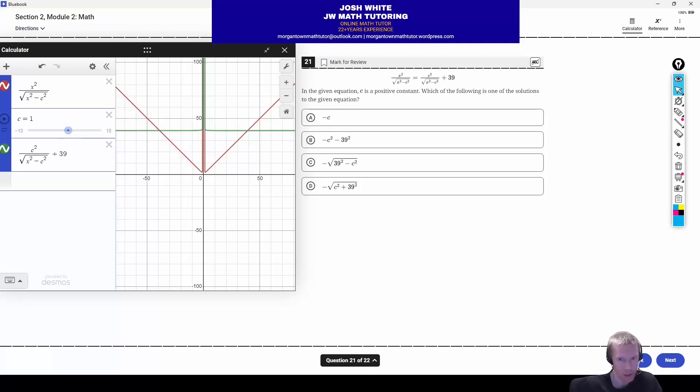So now notice, I set the C value equal to 1. And it tells us in the problem C is a positive constant. So that matches so far. So we have two solutions. Basically, we have negative 39.013 and positive 39.013. All right. So plus or minus 39.013. So now what we need to do is take our value of C, which is 1, plug it into the answer choices, and see which answer choice matches one of these two numbers. So in the first answer choice, it would just be negative 1. Does that match 39.013, positive or negative? No. Get rid of it. Second answer choice, C squared. Well, 1 squared is 1, so it's negative 1 minus 39 squared. Does that equal 39.013? No, obviously not, but you could do it in Desmos just to confirm.